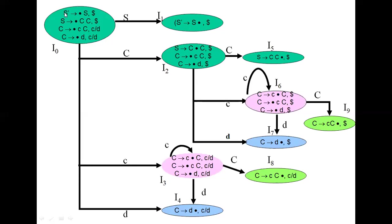Consider this grammar: S' produces dot S, S produces dot C C, S produces dot C C, C produces dot D. These are the lookahead symbols — dollar, dollar, C/D, C/D. This belongs to the I0 state. For goto on S from I0, the dot shifts to give S' produces S dot, dollar. When you apply goto on C from I0, the dot shifts to give I2.